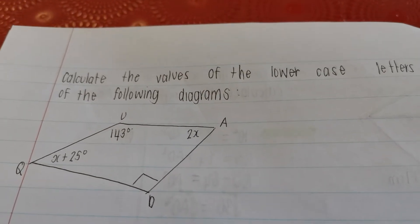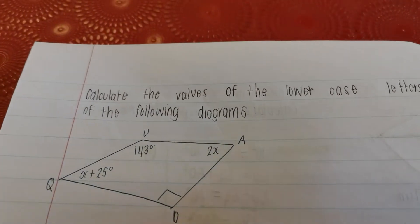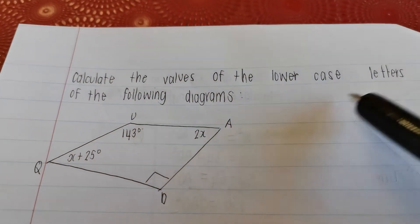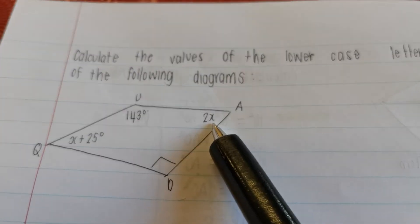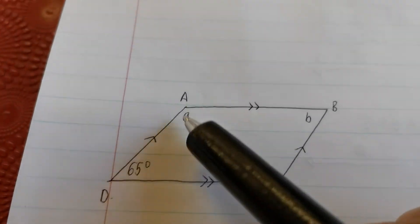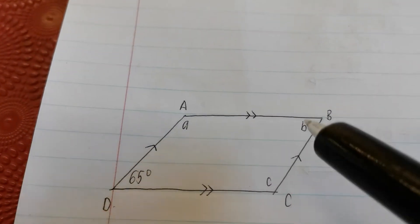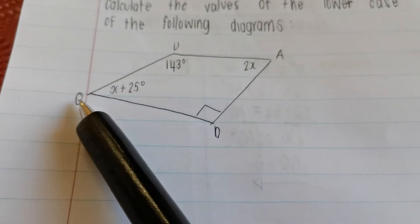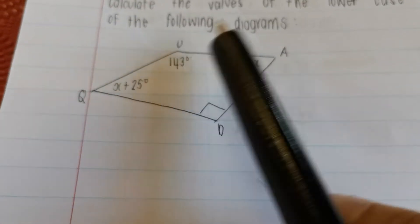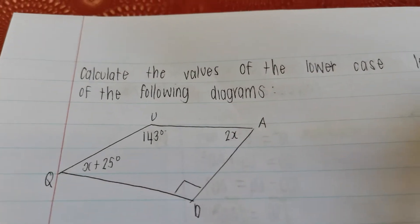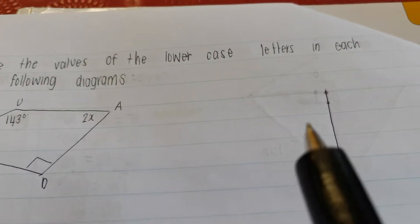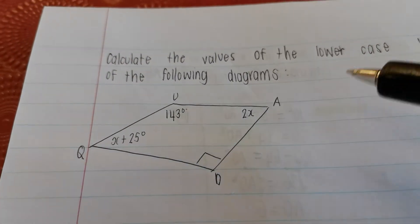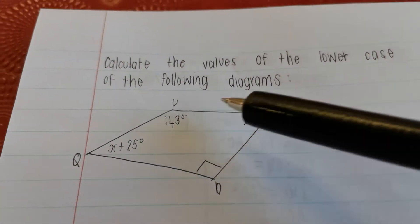The task says calculate the values of the lowercase letters — like alphabet X, alphabet A, alphabet B, alphabet C. I'm not talking about the Q, the U, the A and the D. It's the smaller letters in each of the following diagrams. Let's start over here.